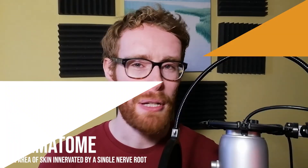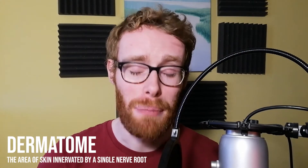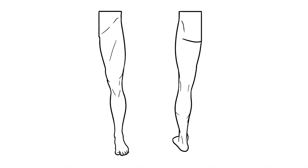A dermatome is the area of skin supplied by a single nerve root. There are a few different dermatome maps you can find, but for this video I'll be using Forster's version and drawing them onto this illustration here, which you can download from the links below.